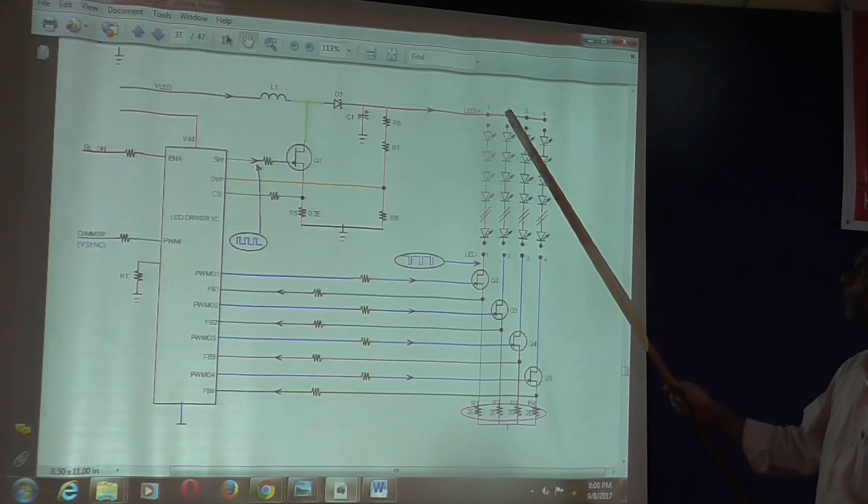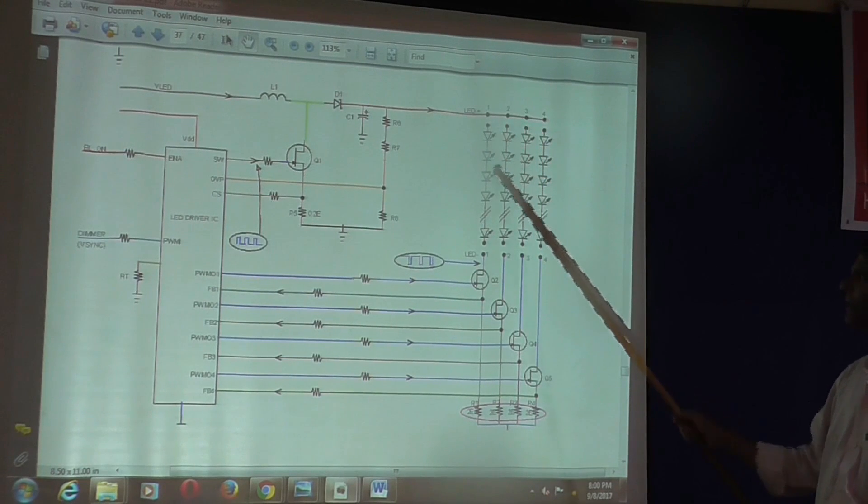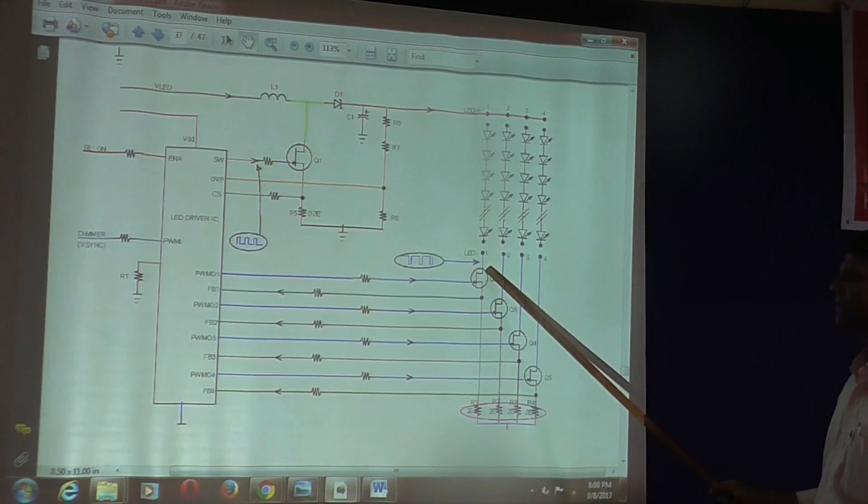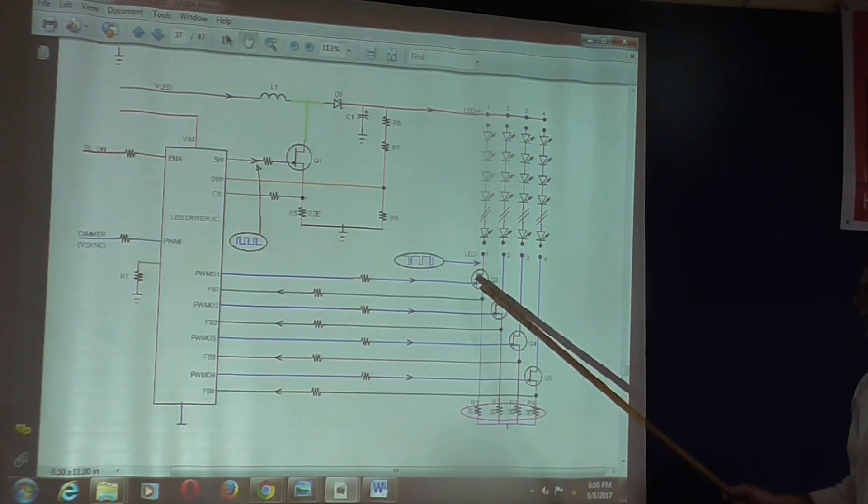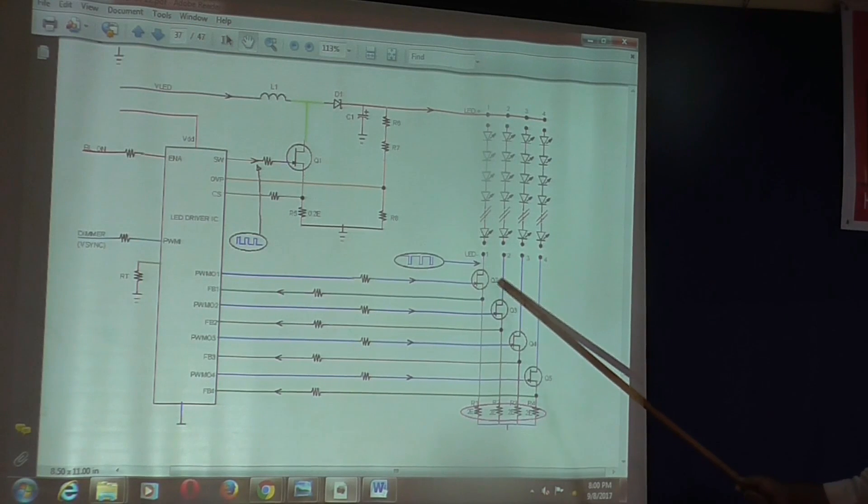current flows through all of the strings, but each string is separately controlled by respective transistors, namely Q2, Q3, Q4, and Q5.